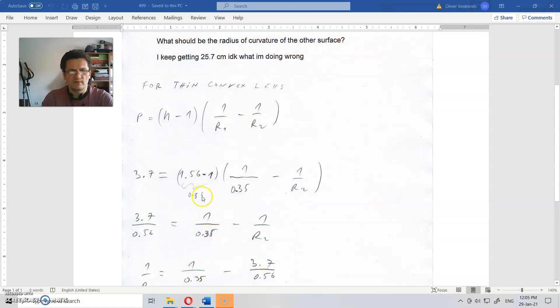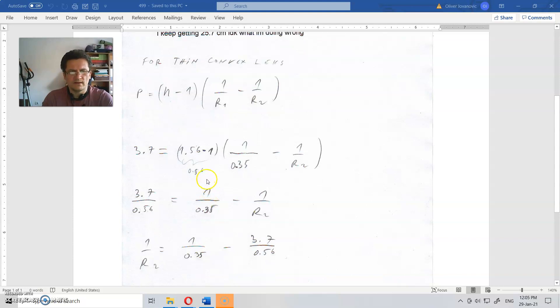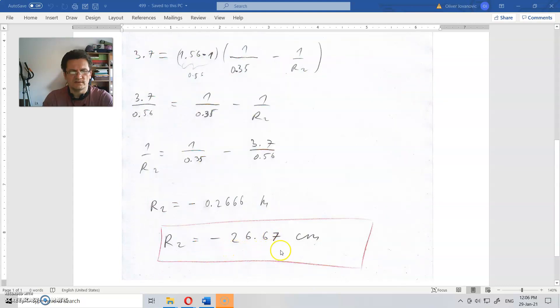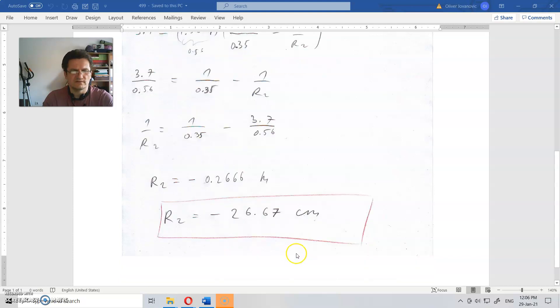And then we'll divide everything by 0.56. We'll get that, and from here we'll change places. That is -0.2666 m or -26.67 cm.